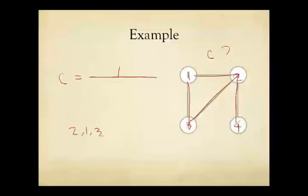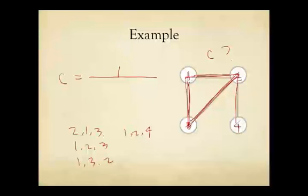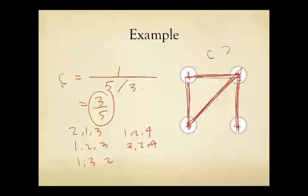Well, there are, let's see how many connected triples. Two, one, three, that's a connected triple. One, two, three, that's another connected triple. One, three, two, that's another connected triple. One, two, four, that's another connected triple. And three, two, four, that's another connected triple. So there are actually five connected triples. Of course, some of them we basically counted more than once. So we have the normalization divided by three. And that means the clustering coefficient of this graph is three over five, which is a pretty big number, considering that C must lie within zero and one. And that satisfies our intuition because in this graph, you can see that is reasonably triad closed.